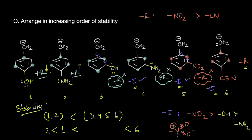Between anions 3, 4, and 5, comparing minus-I strengths: NO₂ > OH > NH₂. In NO₂, the nitrogen has a positive formal charge and is bonded to electronegative oxygen atoms, making nitrogen highly electron-deficient and a very strong inductive withdrawer. Between OH and NH₂, oxygen is more electronegative than nitrogen, so OH has a stronger minus-I than NH₂. Since inductive electron withdrawal removes negative charge from the carbanion, anion 5 (NO₂ at meta) is most stable among these three, followed by anion 3 (OH at meta), then anion 4 (NH₂ at meta).